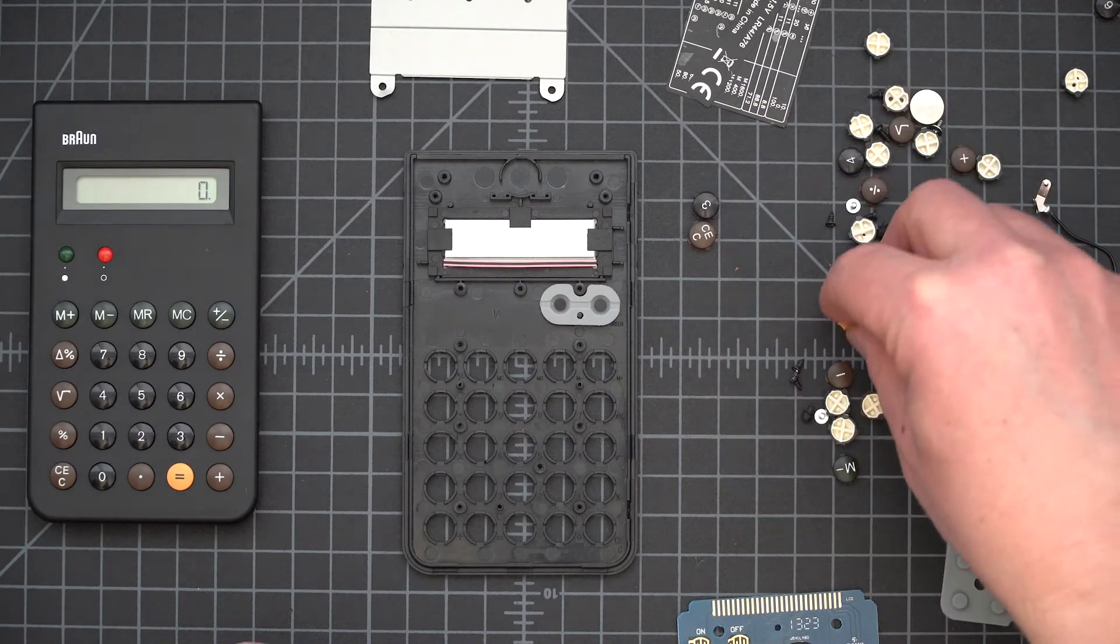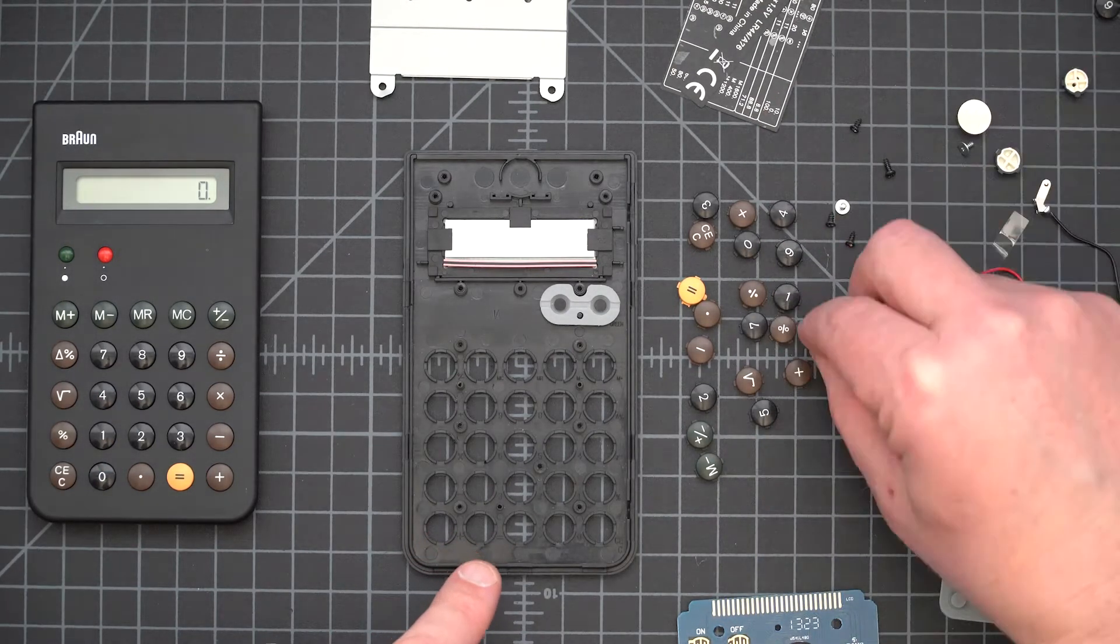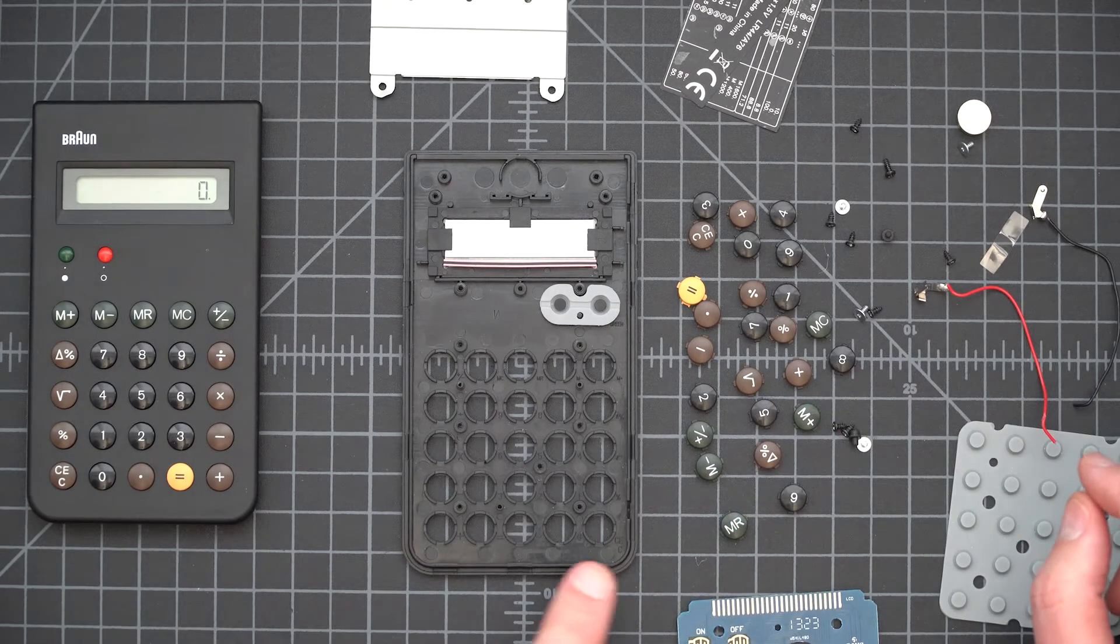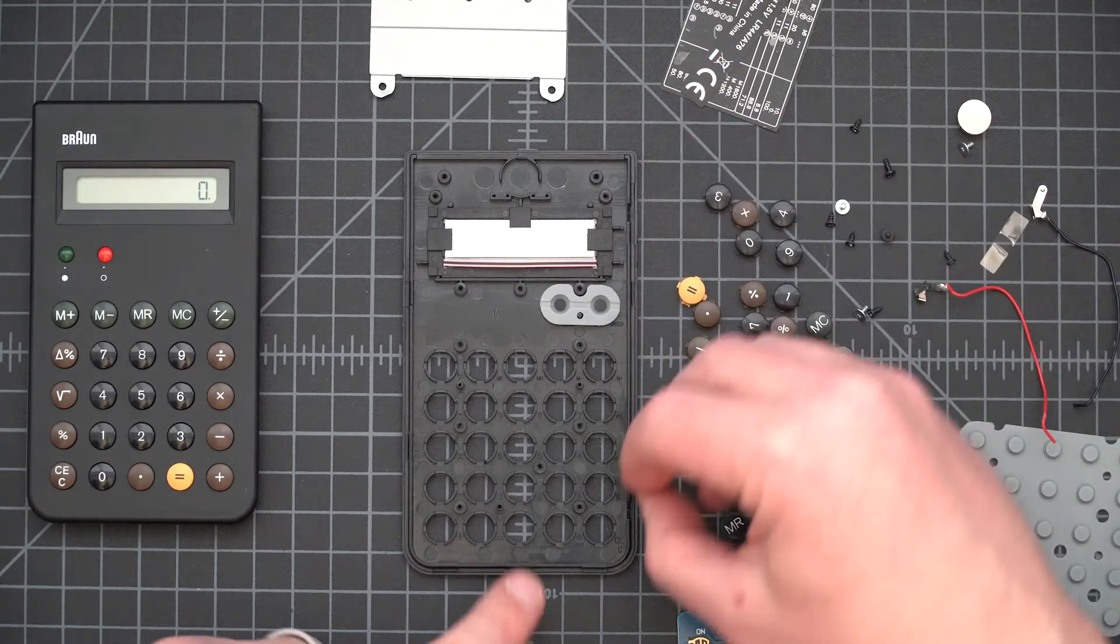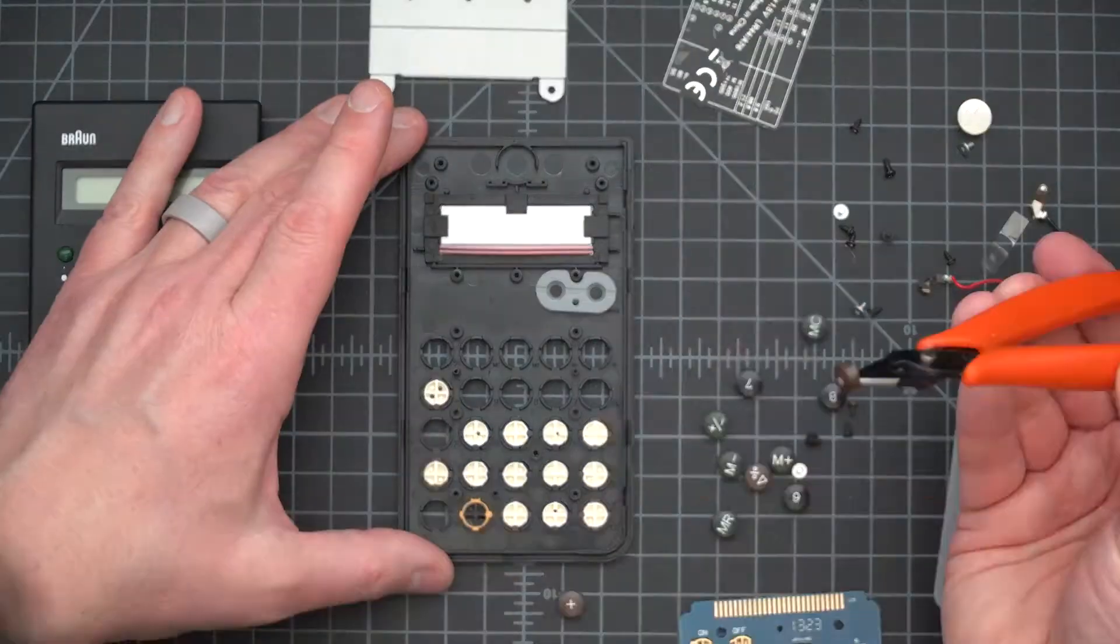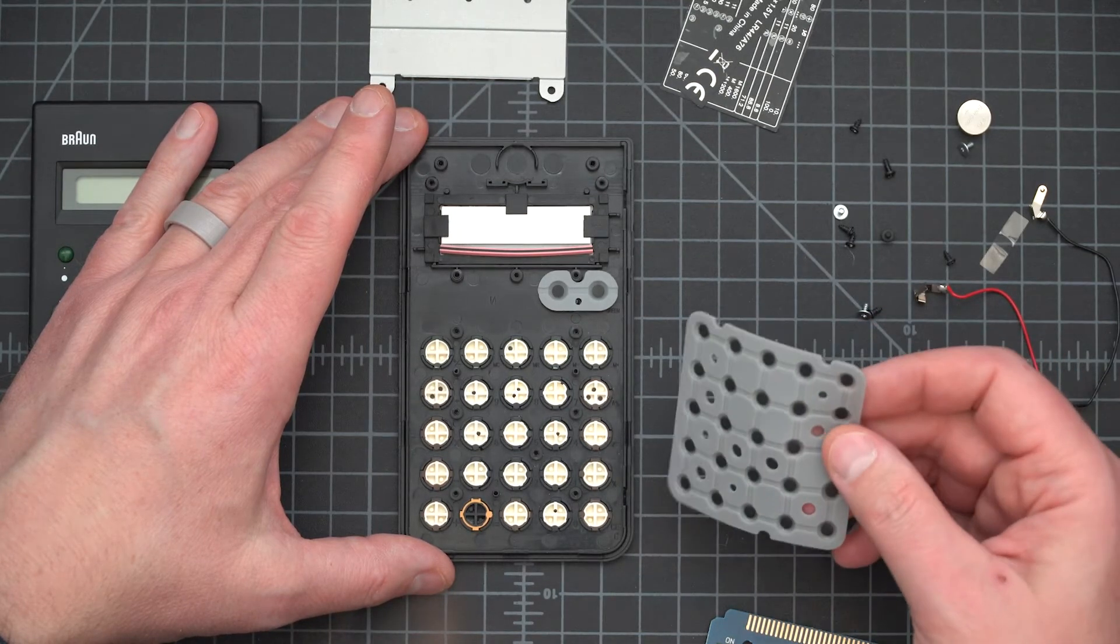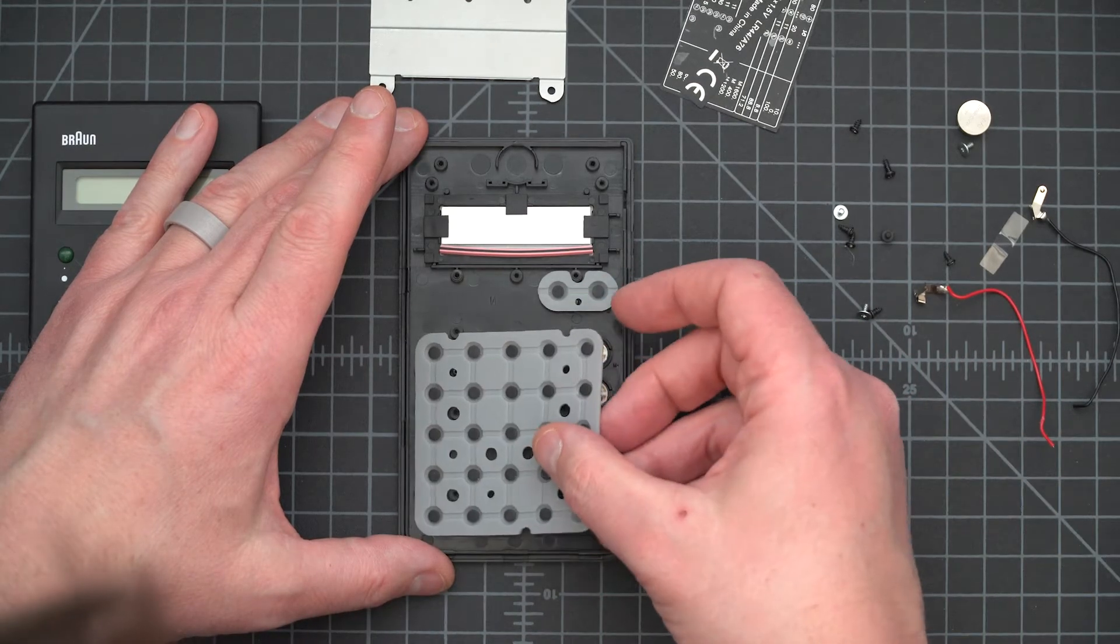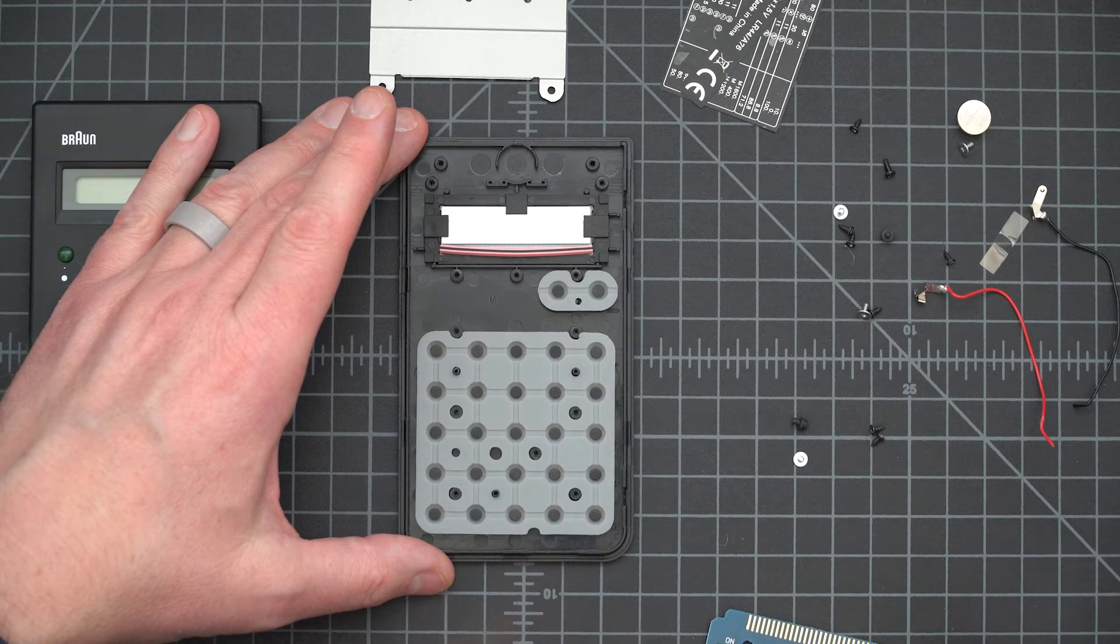Then we have all of these buttons. Let me lay out all these buttons so that I know which ones go where. And hopefully that represents all of them. What we need here is the CE, the clear button. That one goes over here. Then what we have is the silicone pad. The silicone pad goes on here. The question is, how does it go? It goes just like that.